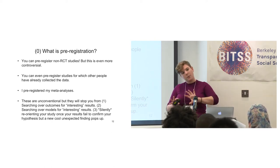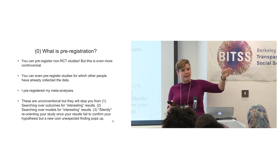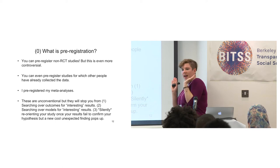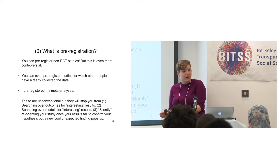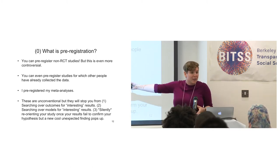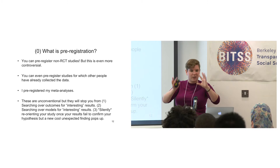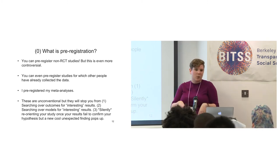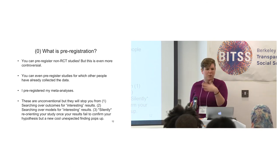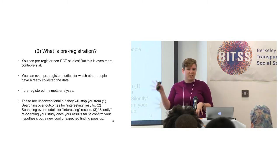Another option would be to write the paper with two sections: section one is your confirmatory data analysis — you're just in the box you promised you would be in. Section two is all of what you would have done in the days before there were pre-analysis plans — starting to look through the data from multiple angles and trying to figure out what actually fits the data well. But then everybody knows that what you're doing is exploratory. Andrew Gelman has on several occasions suggested you should write papers with two sections: the confirmatory section and the exploratory section.